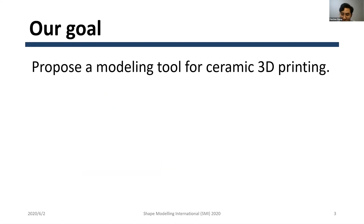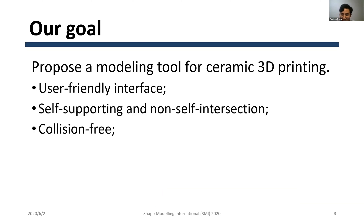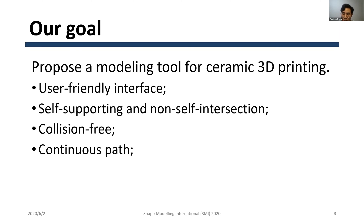So our goal is to propose a modeling tool for ceramic 3D printing, designed for ordinary users to make ceramic 3D printing more accessible. The tool integrates ceramic printing constraints including self-supporting, non-self-intersection, and collision-free, and generates a printing file guaranteeing that the extruder tracks a single continuous path. During fabrication, our continuous path avoids potential collision between the printing head and the physical model.